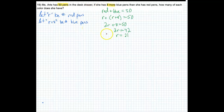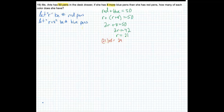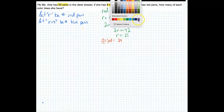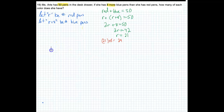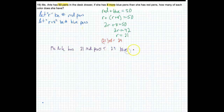There are 21 red pens, and R plus eight is the number of blue pens. So 21 plus eight equals 29 blue pens. So Ms. Arte has 21 red pens and 29 blue pens.